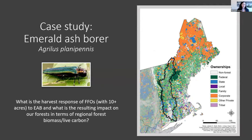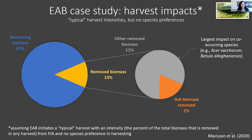We took these survey results and applied them to a specific instance — emerald ash borer — to predict approximately how many parcels would be harvested in response on the landscape. Assuming a typical harvest intensity applied to those parcels, around 13% of the biomass — meaning live carbon — would be removed. However, that assumed a typical harvest response to EAB.